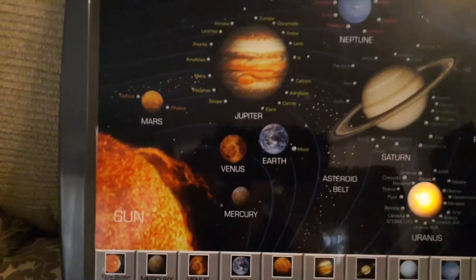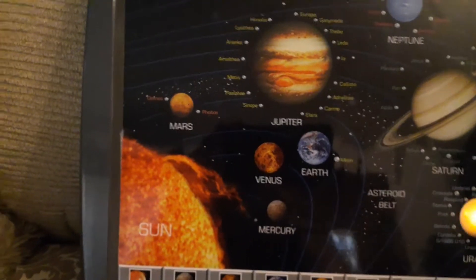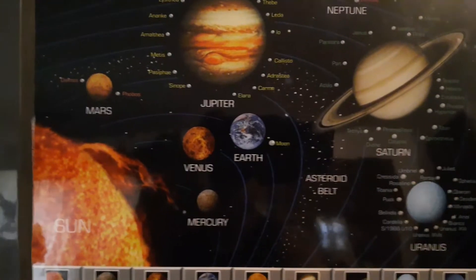This is the planet Uranus. And if you want to know things about it, like how many moons? Uranus has 18 moons.